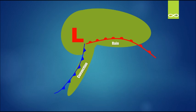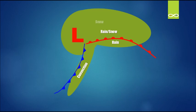To the south of the warm front we have our rain, and just to the north of the warm front we have our rain-snow mix. Further north we have our snow, and also to the west of the area of low pressure we have more snow.